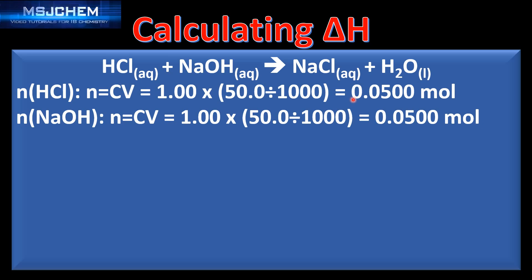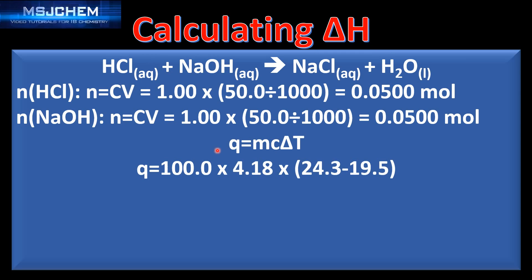In this reaction we have equal amounts in moles of hydrochloric acid and sodium hydroxide, so we don't have to worry about the limiting reactant. Looking at the ratio of hydrochloric acid and sodium hydroxide to water, it's a 1 to 1 ratio. Next we'll use the equation Q equals MC delta T to calculate the enthalpy change.